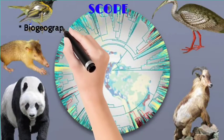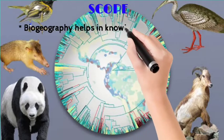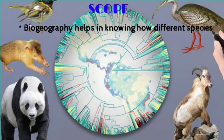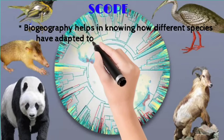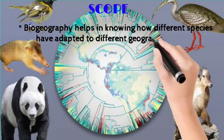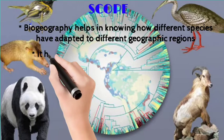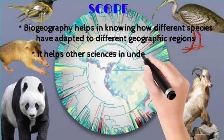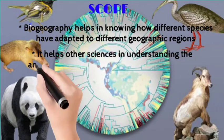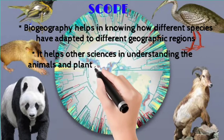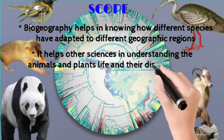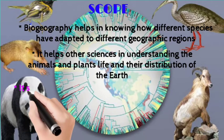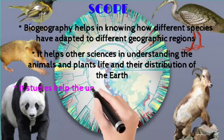Now, the scope of biogeography. First, biogeography helps in knowing how different species have adapted to different geographic regions. Second, it helps other sciences in understanding animal and plant life and their distribution across the earth.